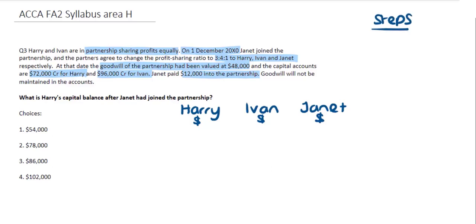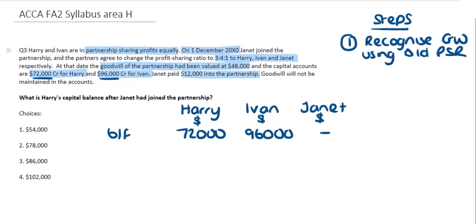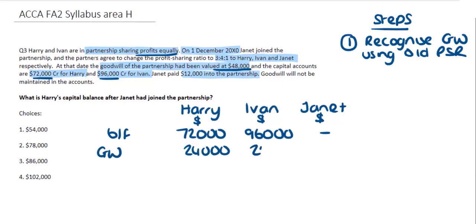We need to set up a working for the capital accounts and remember the key steps when a new partner joins. Working through this chronologically: Harry and Ivan were in partnership first, with Harry at $72,000 and Ivan at $96,000. The first step is to recognise goodwill as an asset using the old profit share ratio. Goodwill was valued at $48,000 and profits were shared equally, so Harry and Ivan each get $24,000 of goodwill added to their capital accounts.